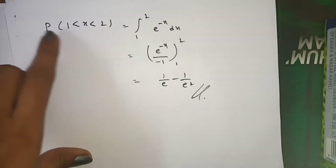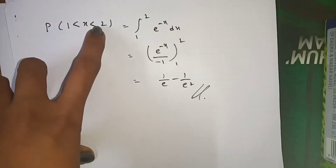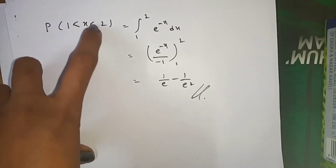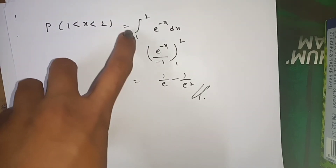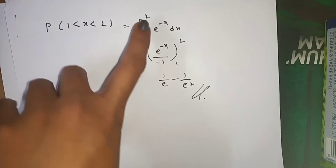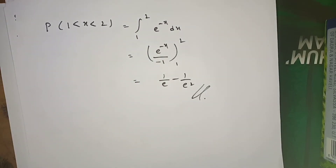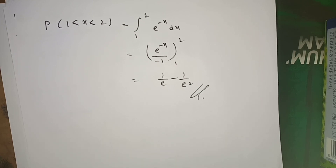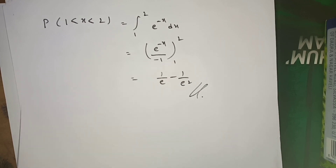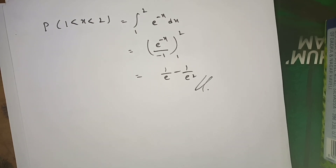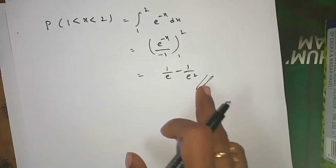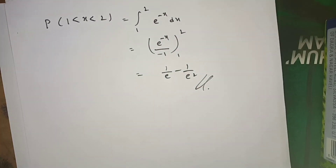Now we find P(1 < X < 2). Since x > 0 in this range, the integral from 1 to 2 of e^(-x) dx (with c = 1 substituted) gives the result. Integrating e^(-x) from 1 to 2 yields the final answer. Thank you.